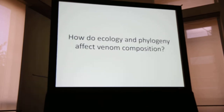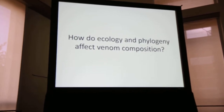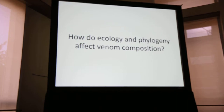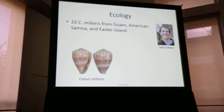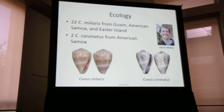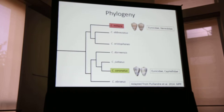So while we understand that there are broad differences in venom composition as determined by superfamily between fish-eaters like Conus geographus and Conus pilatus, we don't know a lot about the phylogenetic scale at which those patterns begin to emerge. To understand the diversification of Conus and the role that venom may play in that process, it's important to ask how venom composition tracks shifts in ecology and how it varies across the phylogeny. A former postdoc from our lab, David Weiss, is making good progress on the ecological component. He sequenced and assembled the venom gland transcriptomes of 22 Conus miliaris individuals from three populations, and also sequenced two closely related Conus coronatus individuals, giving me the opportunity to assess the phylogenetic scale at which differences in venom composition begin to emerge.